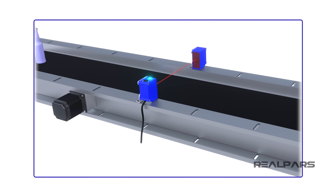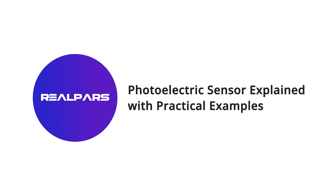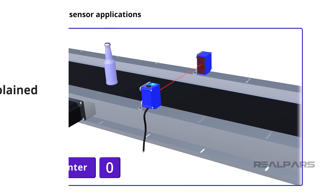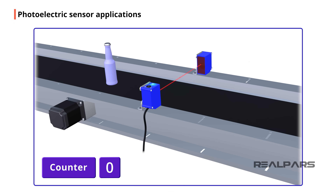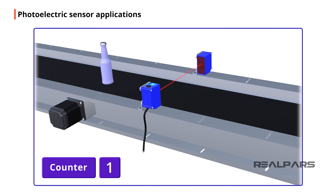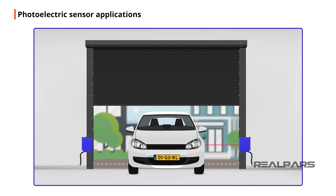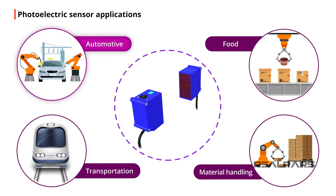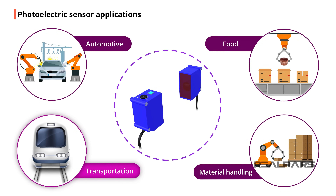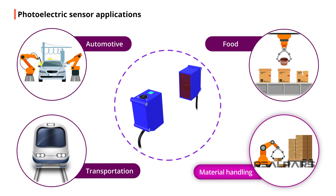A photoelectric sensor is a device that uses light to detect the presence or absence of an object. Photoelectric sensors can be used in many different ways and industries. For example, they can be used to detect objects or the orientation of an object on a production line, they can be used to count, and they can also be used to stop an automatic closing door. Photoelectric sensors are used in the automotive, food, transportation, and material handling industries, to name a few.